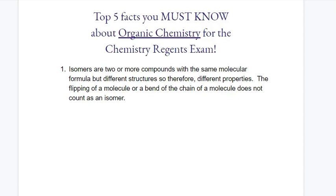Here is number one. You have to know the definition for the word isomer. Isomer means something is the same and something is different. When you have two or more compounds with the same molecular formula, but the structures are different, they have different properties and different names.